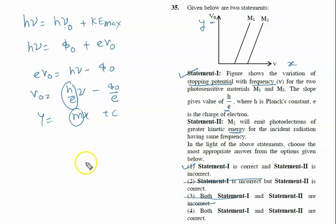Now look at which work function of M1 and M2 is more. First of all, check it out. If we extend this graph line and this line, the slope gives us the intercept.